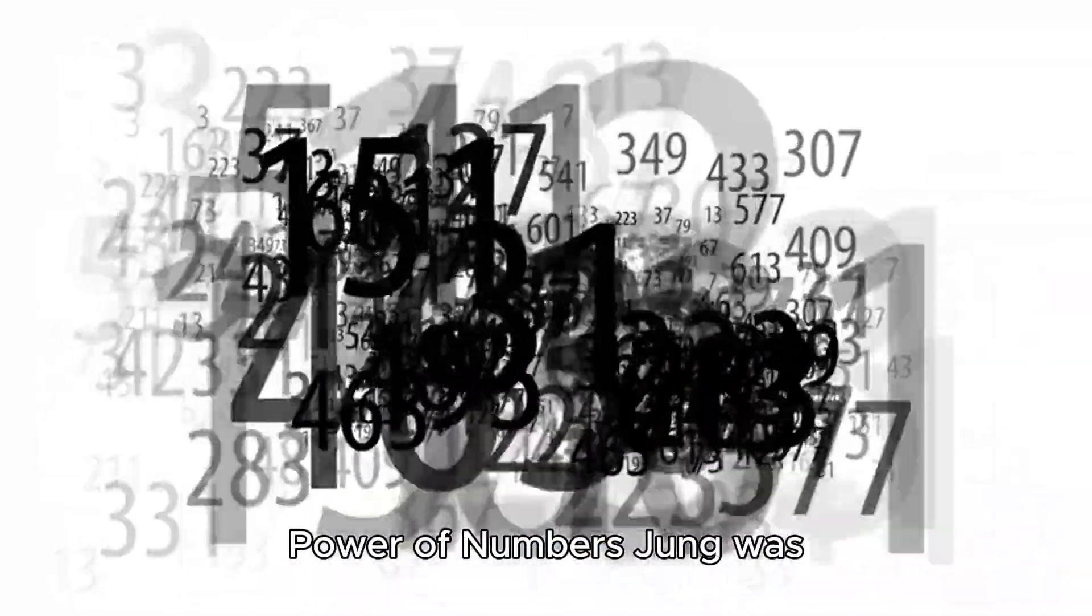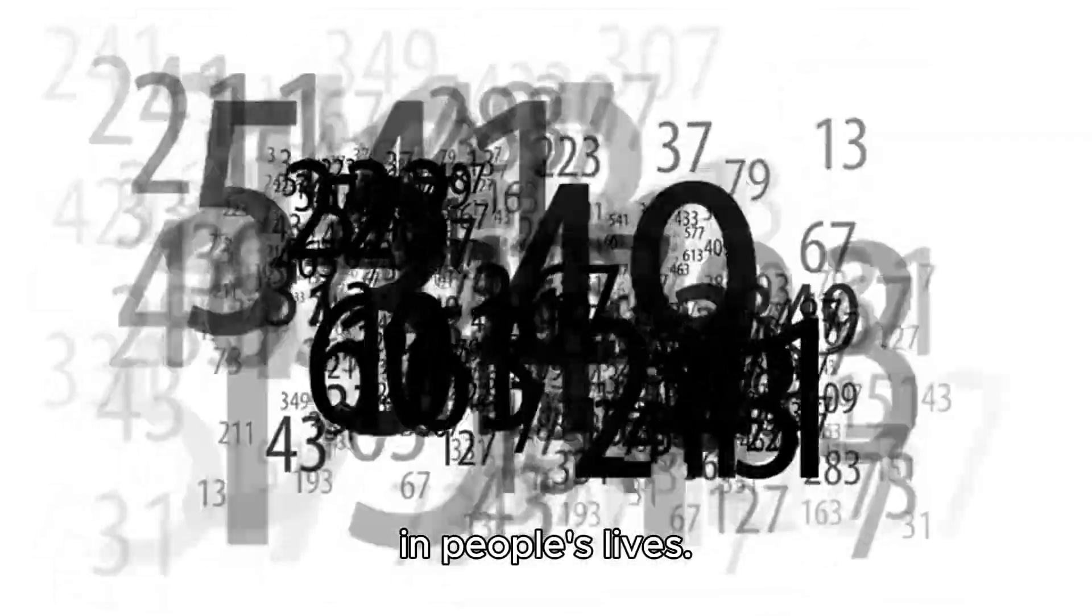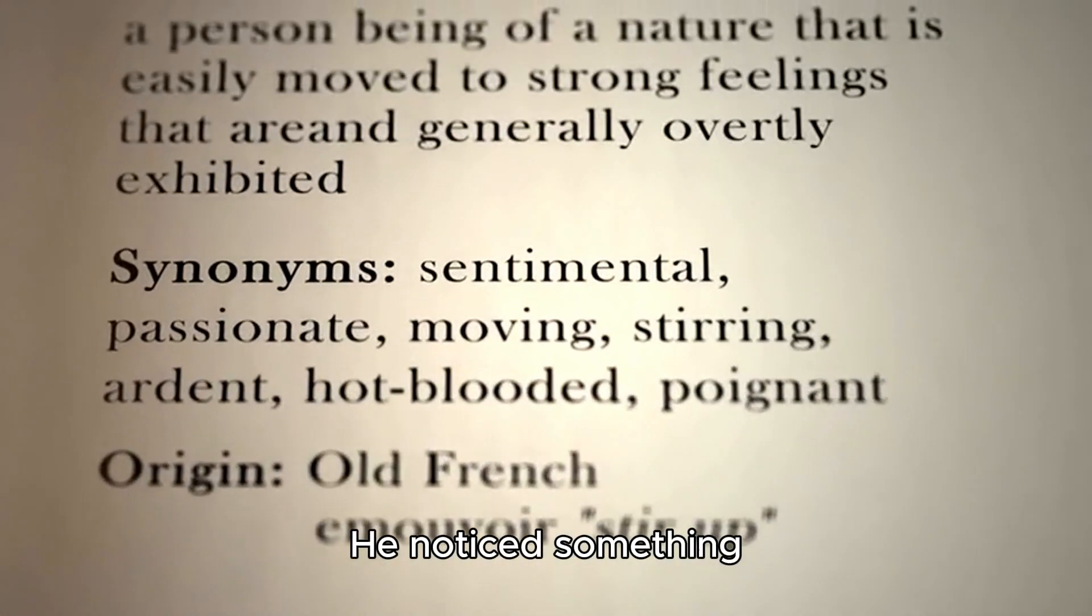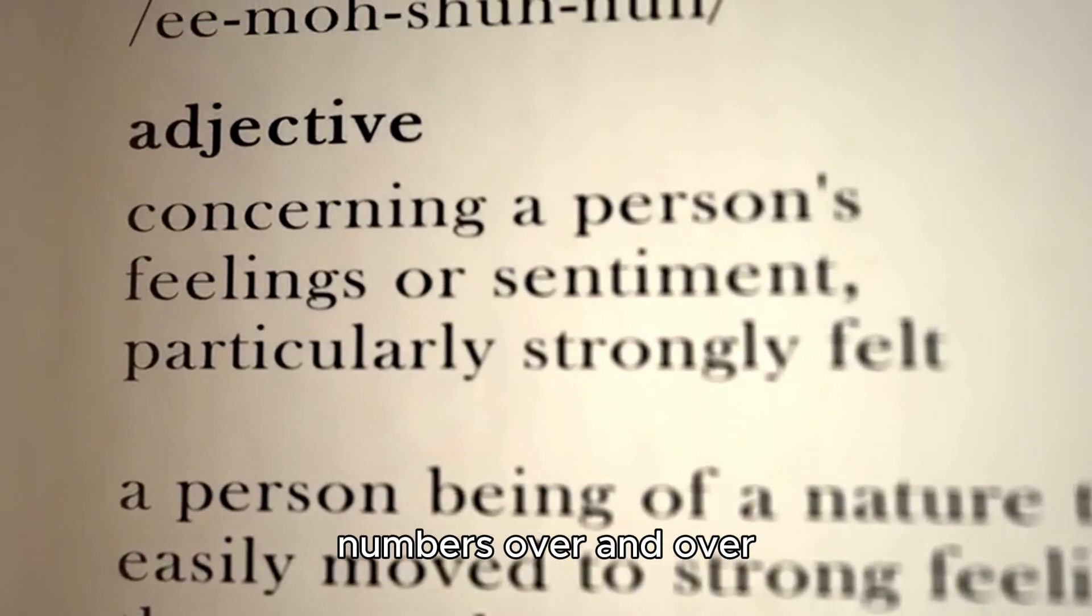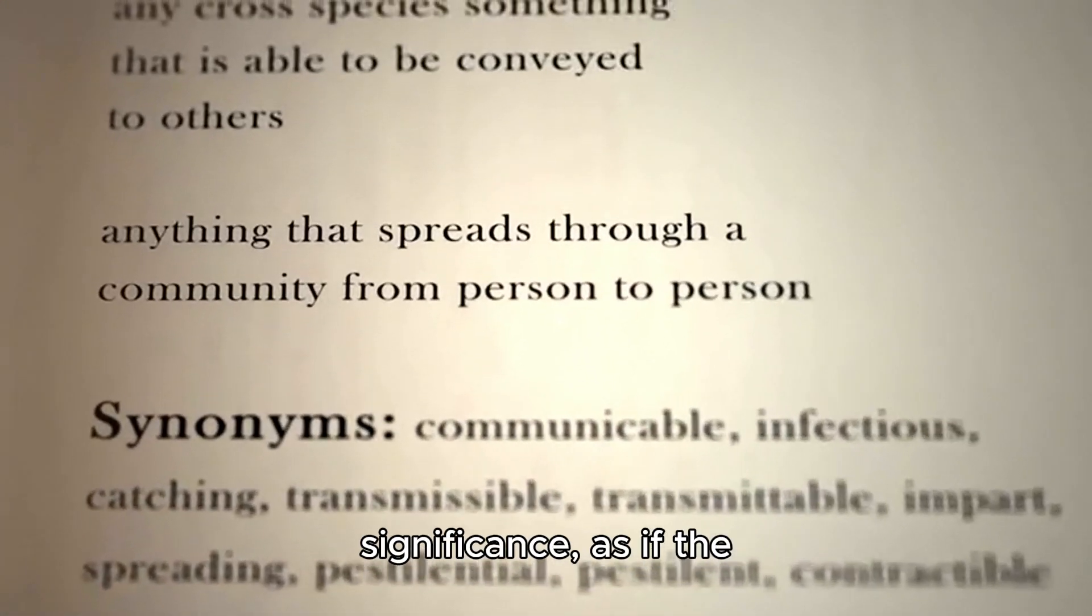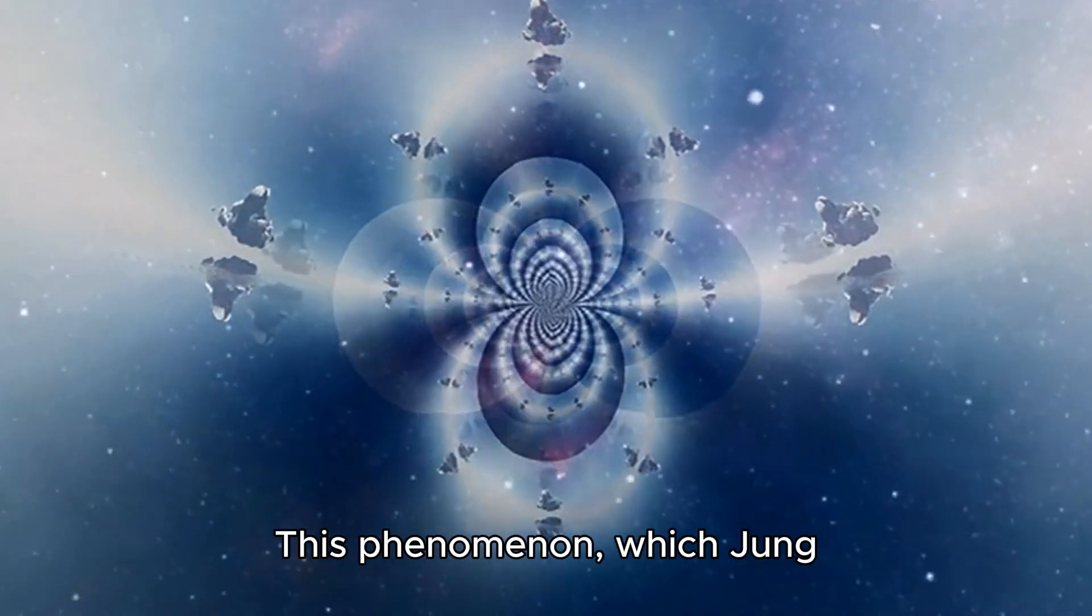Carl Jung and the mystical power of numbers. Jung was fascinated by the mysterious ways in which numbers seemed to show up in people's lives. He noticed something strange: often, people would encounter certain numbers over and over again in moments of significance, as if the numbers themselves were symbols of deeper meaning.